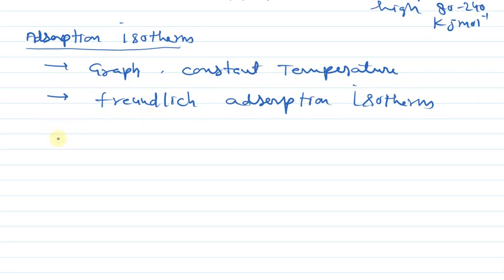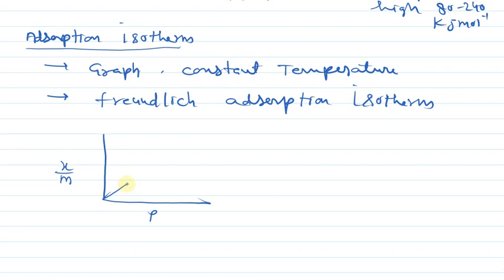The adsorption isotherm is a graph drawn at constant temperature, which is why it is called an isotherm. This graph is given by Freundlich, therefore it is also called the Freundlich adsorption isotherm. In the Freundlich adsorption isotherm, we draw a graph between pressure and x/m, where x/m is the mole fraction of adsorbate per unit mass of adsorbent. The graph has three parts.